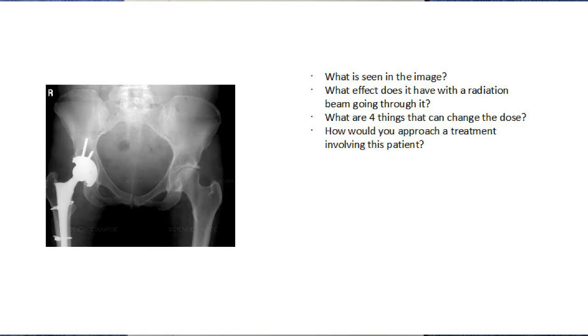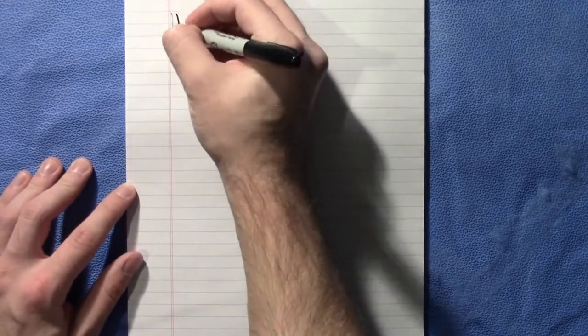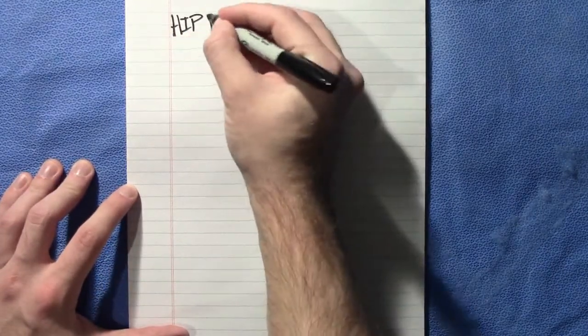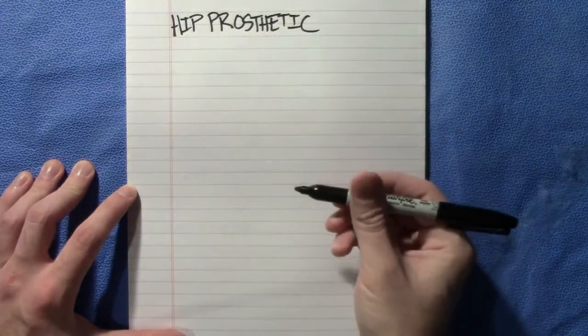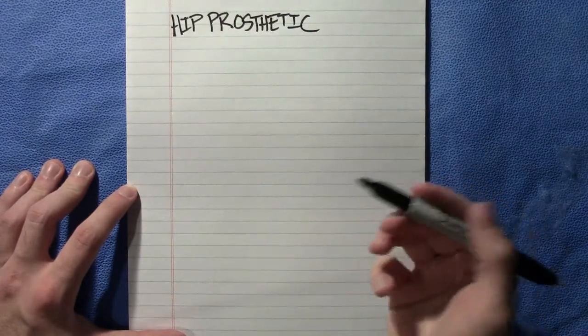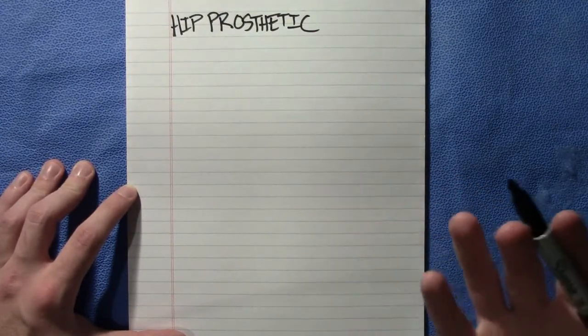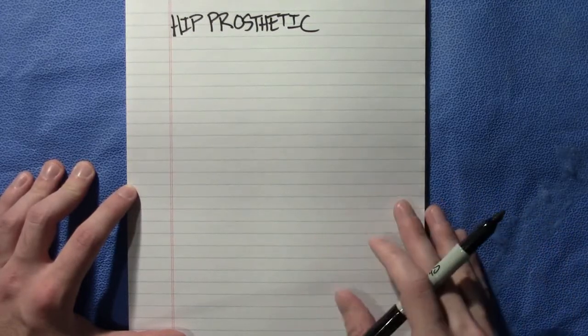Welcome to another video about therapeutic medical physics. Whether you're interested in hip prosthetics or you're studying for an oral or written exam in medical physics, I want to welcome you and begin by discussing the image you just saw at the beginning of the video. In an oral exam you may be asked what exactly you are seeing in this image. You'll typically see a KV image, and what we are seeing here is simply a hip prosthetic — very easy to see. In an oral or written exam, they want you to identify what is different about this image.